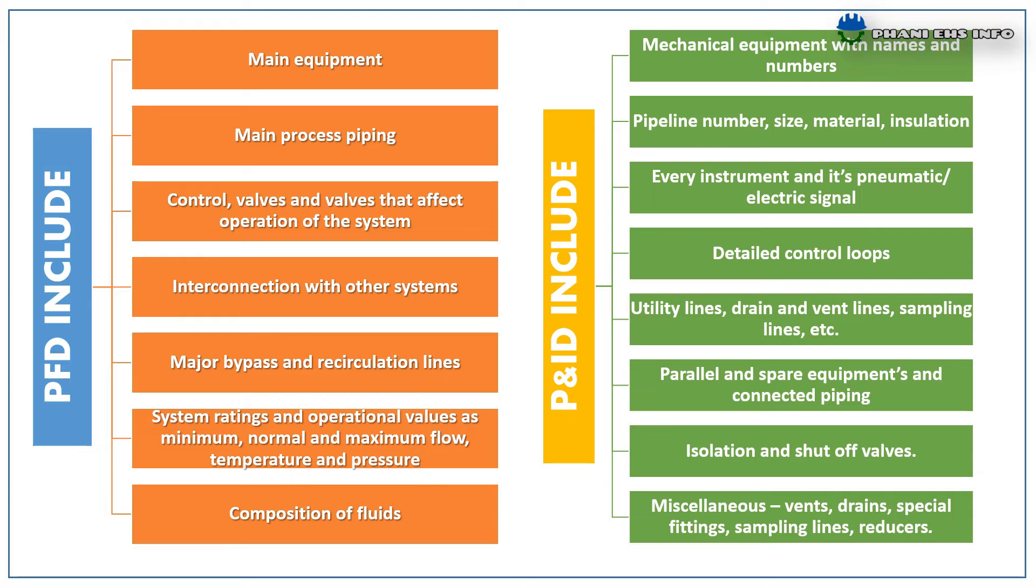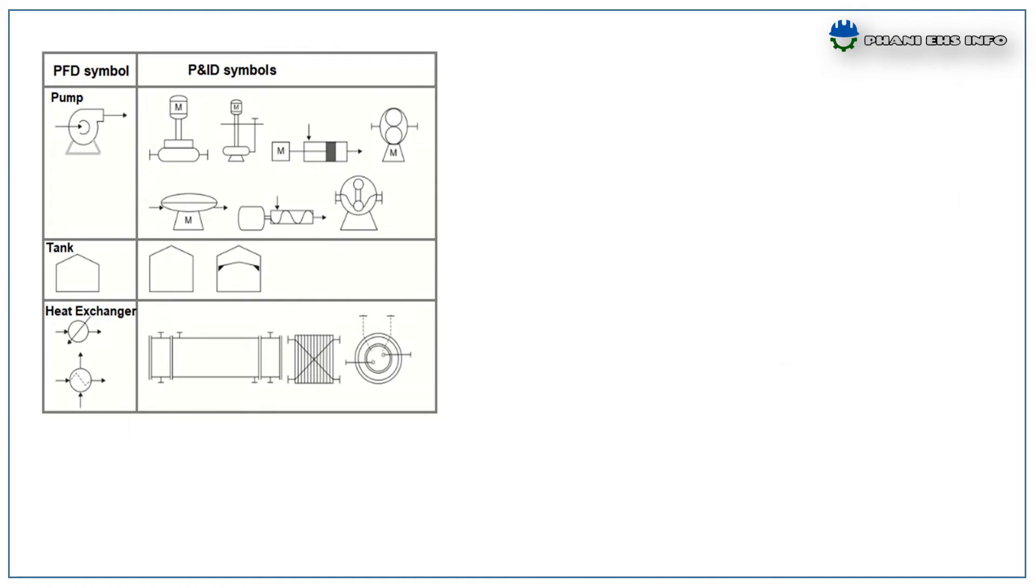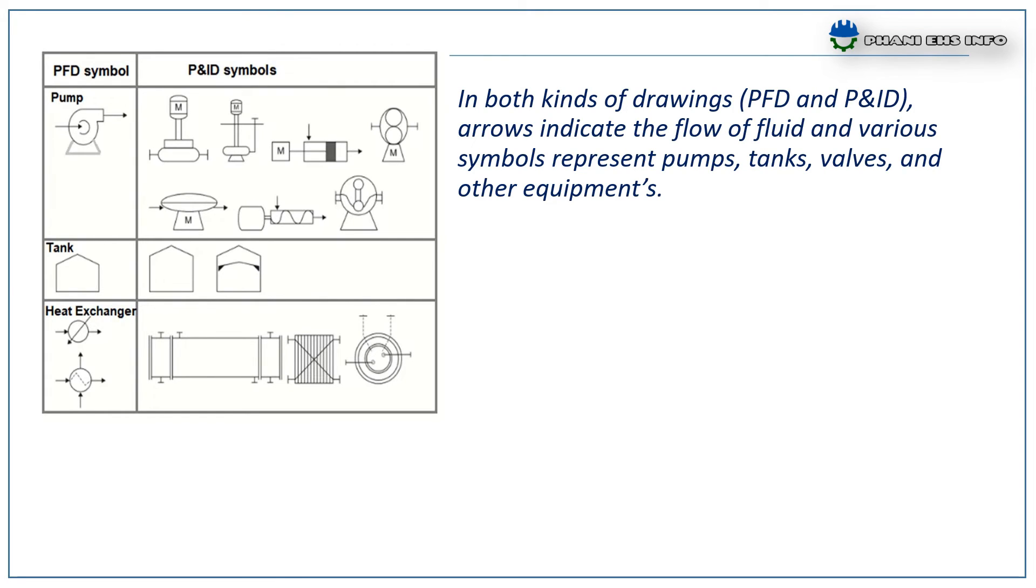Signs and symbols. Both the kind of drawings PFD and P&ID, arrows indicates the flow of fluid and various symbols represent pumps, tanks, valves and other equipment. The symbols used vary somewhat from organization to organization.